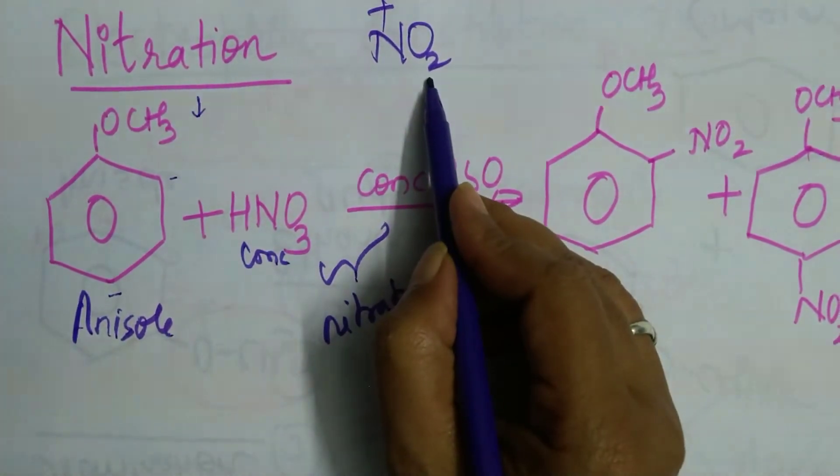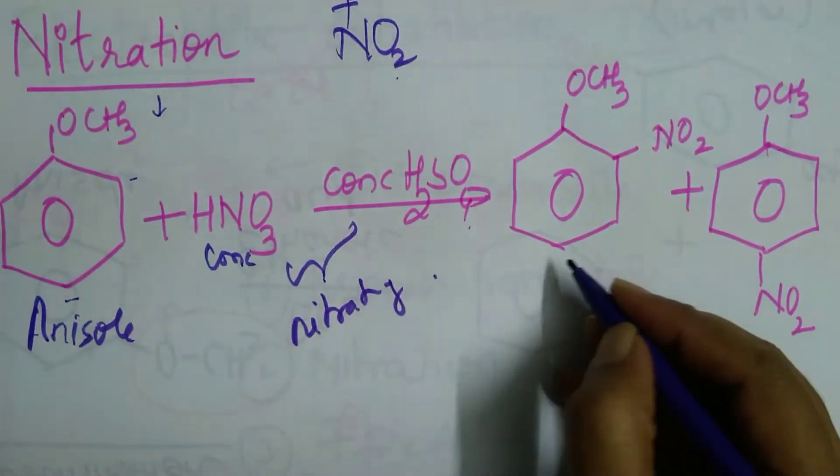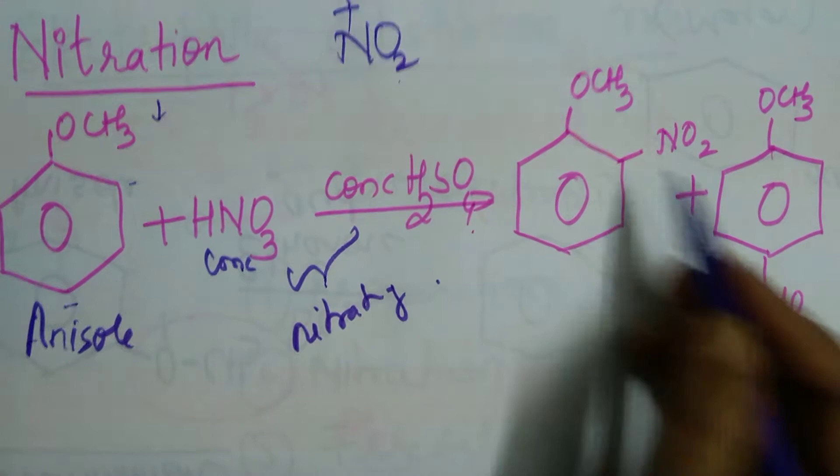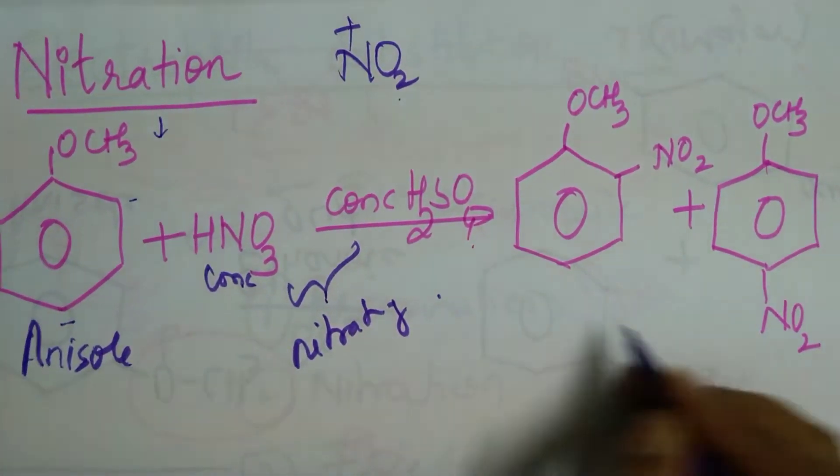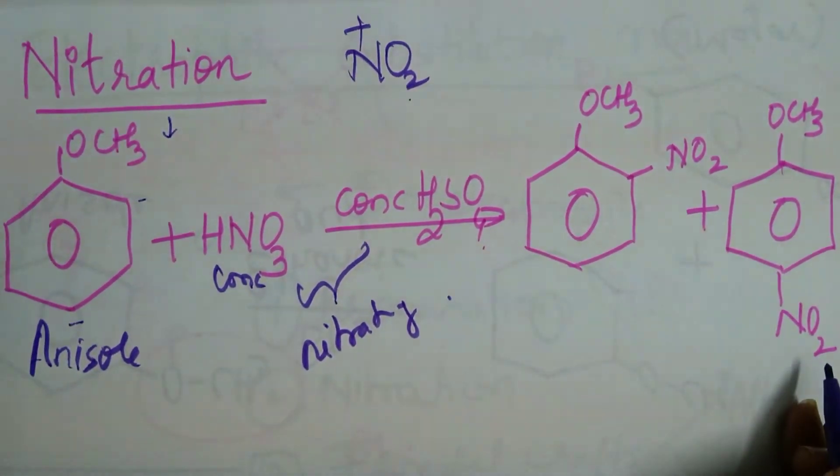It helps in generation of nitronium ion. As I already said, because it is an electron donating group, there is negative charge developed at ortho and para position. So what happens? Nitronium ion attacks either ortho position or para position.